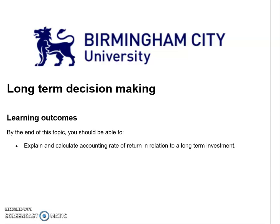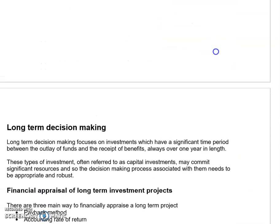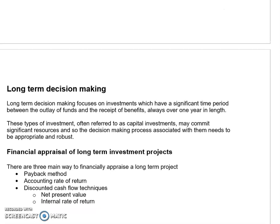In this video we'll be looking at one very specific way of appraising a long-term project: the accounting rate of return, frequently referred to as the ARR. This is part of a larger topic on long-term decision making, where we're looking at investments that will last for a long time, involving the outlay of substantial funds. There are three main ways to financially appraise such a project: the payback method, the accounting rate of return, and discounted cash flow techniques.